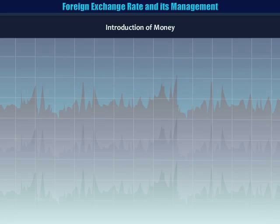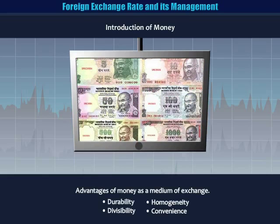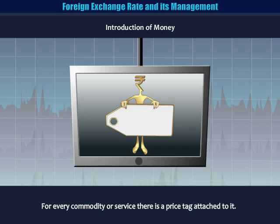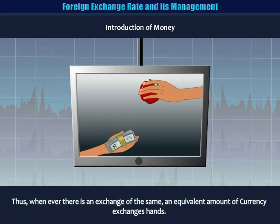Introduction of money. It is truly said that necessity is the mother of all inventions. Thus it was due to the flaws of the barter system that finally saw the rise of currency as a medium of exchange. A quick look at the advantages of money: for everything we buy or sell a certain price is levied on it. The price is a certain amount of money, thus money forms a medium of all exchange for all transactions, be it goods or services.